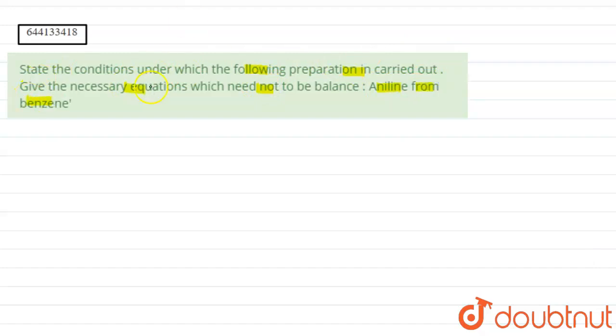Now we know benzene is C6H6. If we react it with nitric acid in the presence of concentrated H2SO4 at a temperature of concentrated H2SO4 at a temperature of 313 to 333 kelvin,